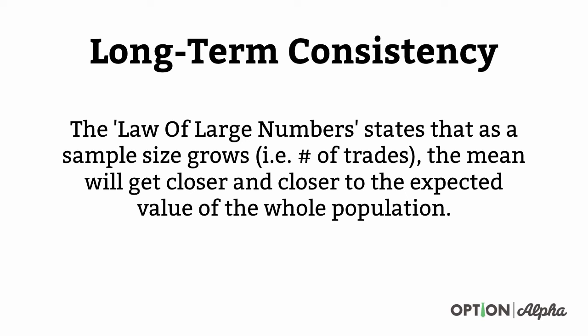The last thing we have to talk about is long-term consistency. People always ask me how to be more consistent with their trading, and it's really simple — it's a matter of being persistent and consistent at the same time. The law of large numbers states that as a sample size grows — i.e., the number of trades — the mean will get closer and closer to the expected value of the whole population. The more times you trade, the closer you're going to get to the probability that you're targeting.